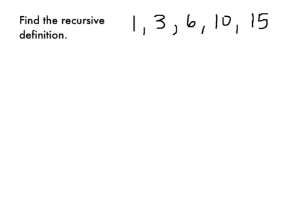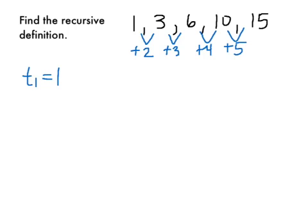This example is definitely more complicated. But we want to take the same strategy. We're looking for a pattern. Here we have a plus 2, then a plus 3, then a plus 4, then a plus 5. So we don't have a consistent pattern, but we are adding one more each time. So to start our definition, we're going to write t₁ equals 1. We always want to define that first piece.